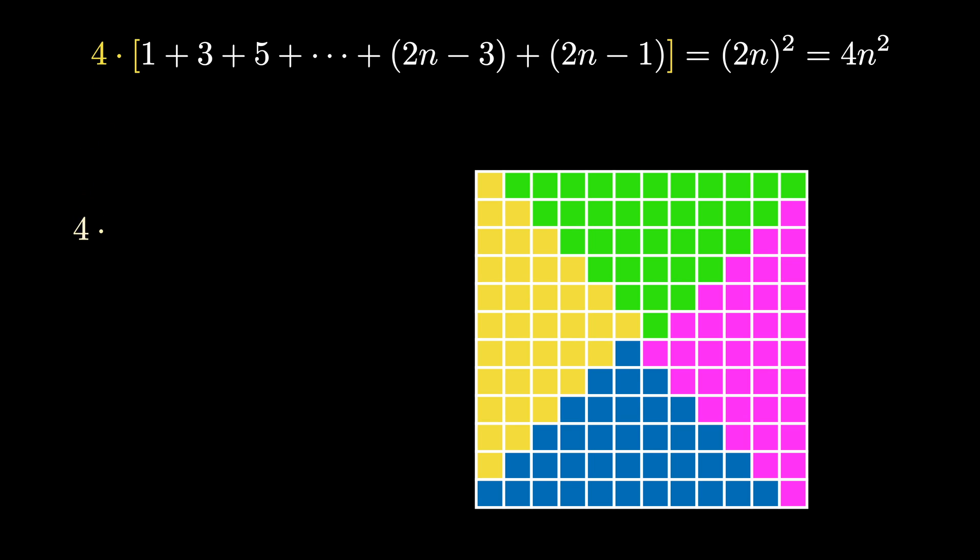Therefore, 4 times the sum of the first n odd numbers is equal to 4 times n squared. If we divide both sides by 4, we see that the sum of the first n odd integers is equal to n squared.